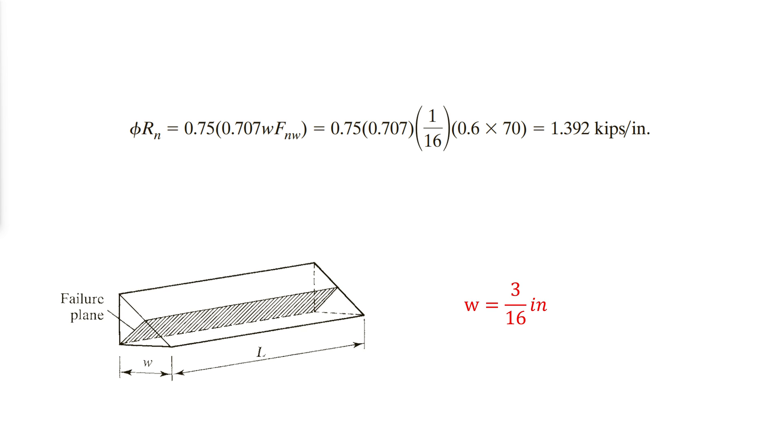We can simplify the weld strength equations even further when using E70 electrodes and writing the weld width in terms of 1/16th of an inch. So, as an example, when having a weld of size 3/16 inches, the strength per inch is simply 1.392 times 3.